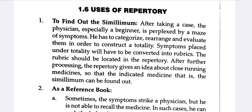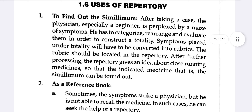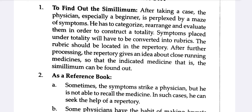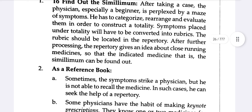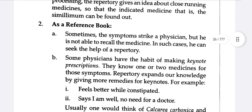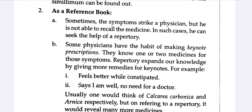Symptoms placed under totality have to be converted into rubrics, which should then be located in the repertory. After further processing, the repertory gives an idea about the closest running medicine, so you can find out the similimum. Sometimes a striking symptom comes to the physician's mind but he is not able to recall the medicine.